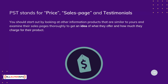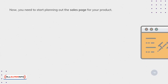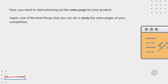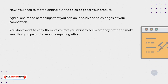You don't want to charge too much more than the other people in your field. Now you need to start planning out the sales page for your product. Again, one of the best things that you can do is study the sales pages of your competition. You don't want to copy them, of course — you want to see what they offer and make sure that you present a more compelling offer. You also want to get an idea of how sales pages are structured.